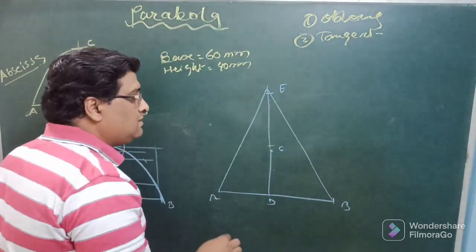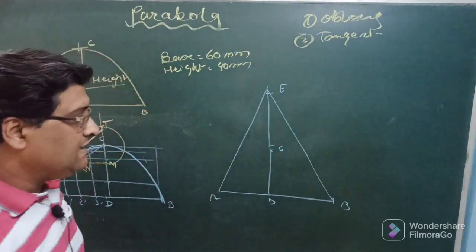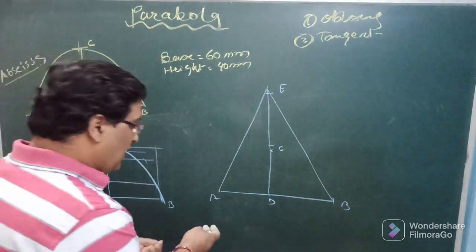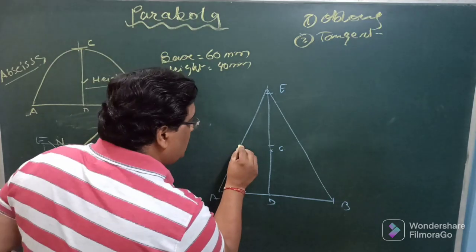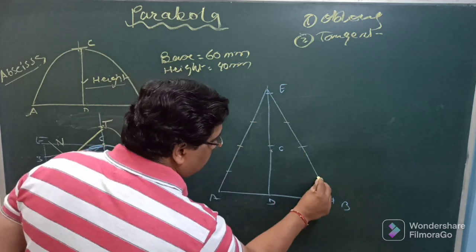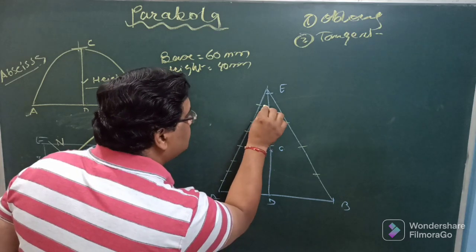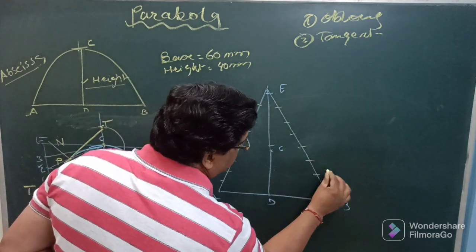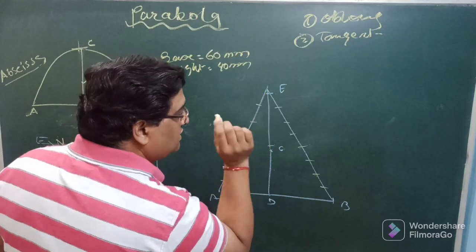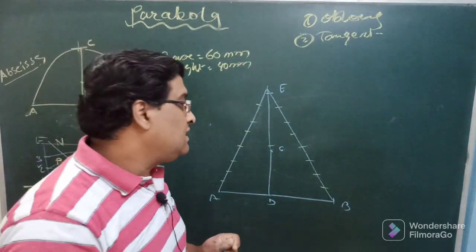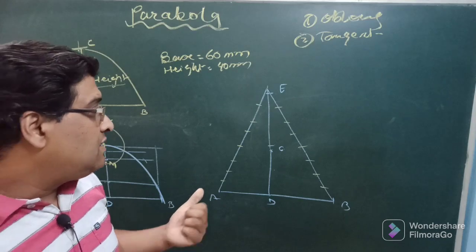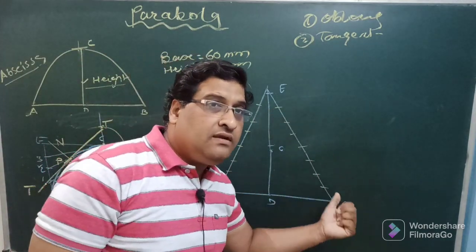Now divide this A to E and E to B into equal number of divisions. Say if I am dividing this line into eight parts, so this must be divided into eight equal divisions. Both the sides you have to take eight divisions like this. If it is divided into eight this should also be divided into eight. If it is divided into ten this should be ten. Take as much as points you can take, means as much as number of divisions on these lines, because the more the number of divisions will be there, more smoother curve will be obtained.